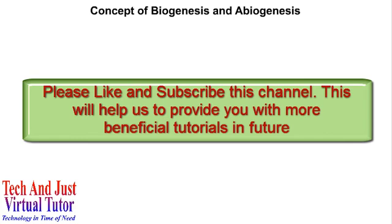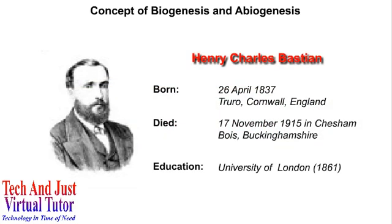The term Biogenesis was first used by Henry Charles Bastian, who was an English Physiologist and Neurologist. He graduated in the year 1861 from the University of London and then took Fellowship of the Royal Society in the year 1868. He used the term Biogenesis to mean the generation of life from non-living materials, having witnessed the spontaneous generation of living organisms out of non-living matter under his microscope.